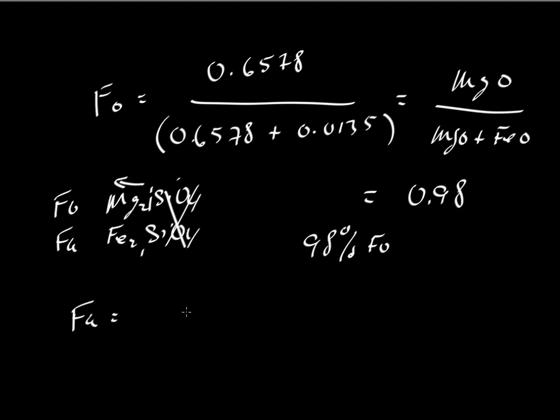And we could do the same kind of calculation for fayalite. Fayalite would be 0.0135 in the numerator. And then we have the same denominator as down here. We'd look at it as a total fraction of the total amount of magnesium, 0.6578 plus 0.0135. And this would come out to 0.02.